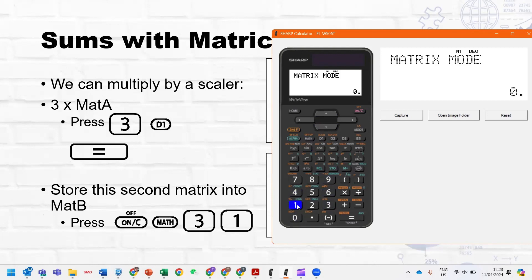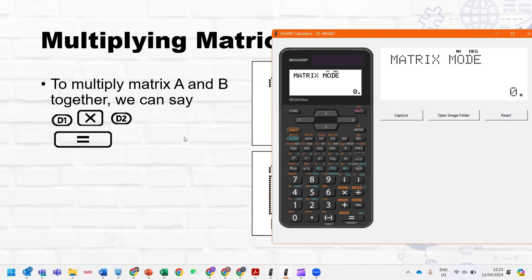So now we've got a matrix in A and a matrix in B. If we wanted to add matrix A and B together, we could just say D1 plus D2, which gives us matrix A plus matrix B. If we wanted to multiply the matrices together, matrix A times matrix B. There we go. If we wanted to square matrix A, just like so. So very easy and simple to do.